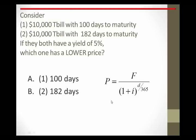So let's consider a little intuition here for a minute. So let's consider a $10,000 treasury bill with 100 days to maturity, and a $10,000 treasury bill with 182 days to maturity. Suppose they both have a yield of 5%. If that's true, one of them must have a lower price. And which one would it be? Would it be the bond you wait 100 days for, or the one you wait 182 days for? Which one would have the lower price?